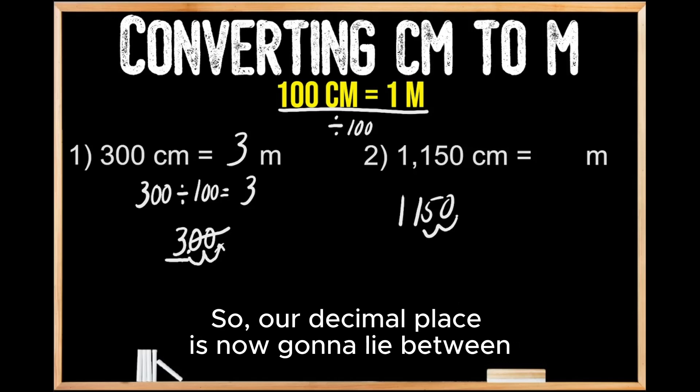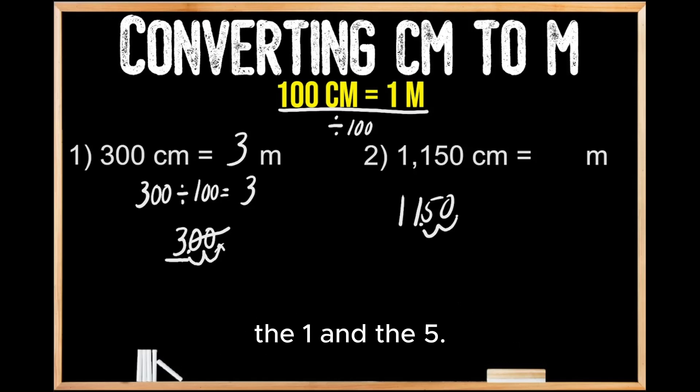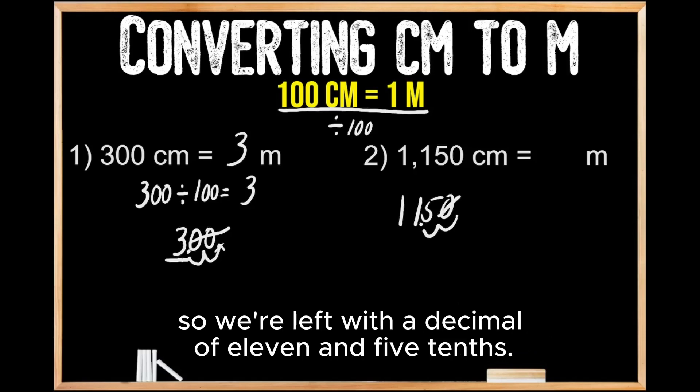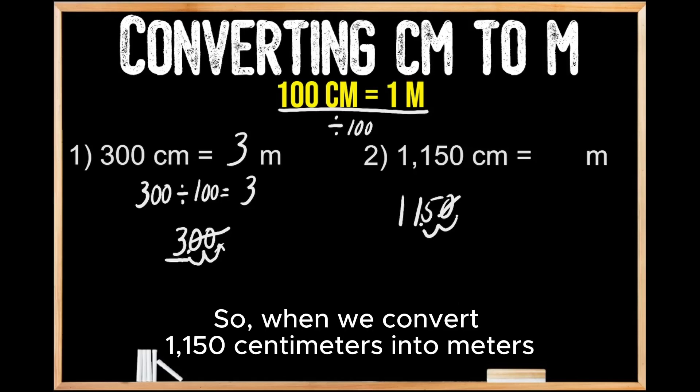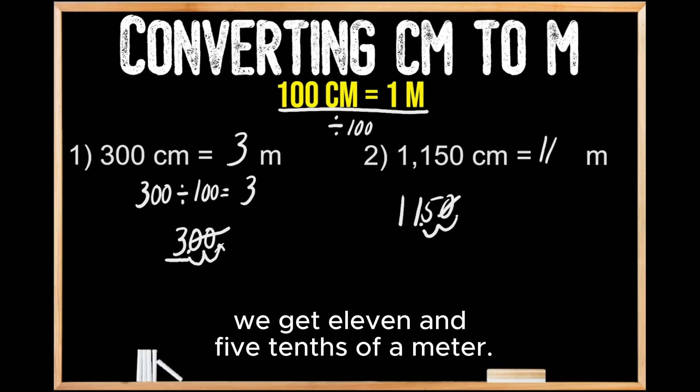So our decimal place is now going to lie between the 1 and the 5. We don't have to include the zero to the right of the decimal place. So we're left with a decimal of 11 and 5 tenths. So when we convert 1,150 centimeters into meters, we get 11 and 5 tenths of a meter.